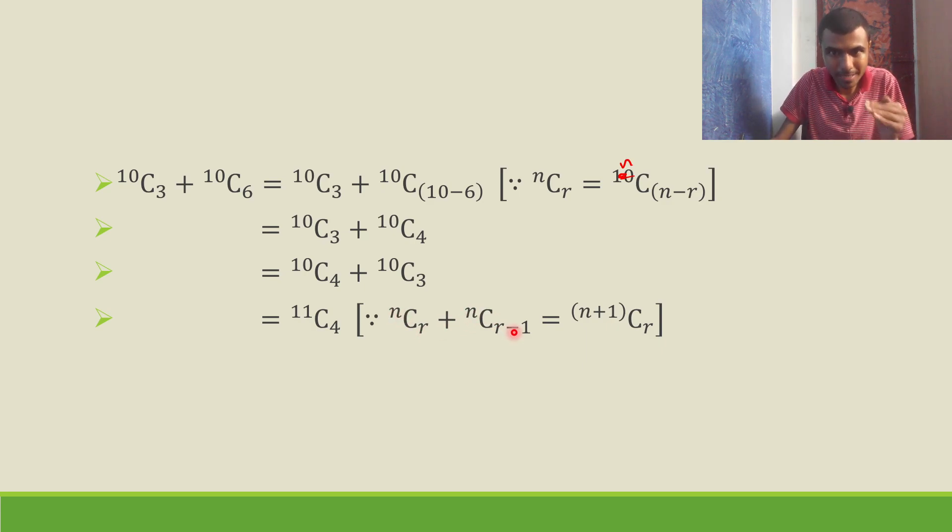Once again I am telling nCr plus nC(r-1) is (n+1)Cr. In place of n, we have 10 here. 10C4 plus 10C3, nCr plus nC(r-1). 10C4 plus 10C(4-1) is (10+1)C4, which is 11C4.